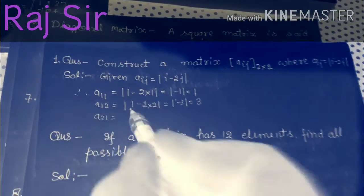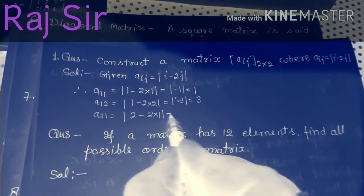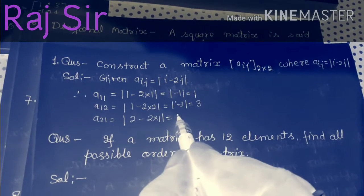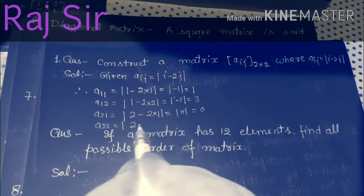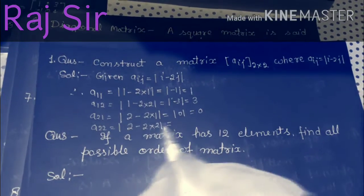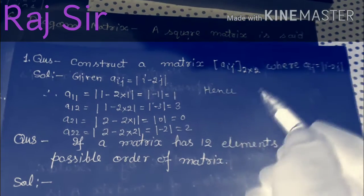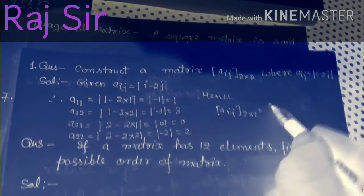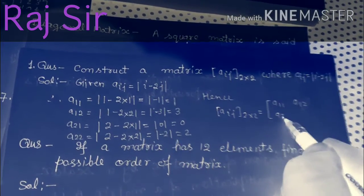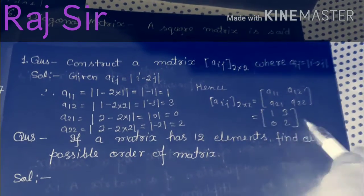A21 equal to mod 2 minus 2 into 1, equal to 2 minus 2, equal to mod 0, equal to 0. And A22 equal to mod 2 minus 2 into 2, equal to mod 2 minus 4, equal to mod minus 2, equal to 2. Hence, the required matrix A(i,j) of order 2 cross 2 is equal to [A11, A12; A21, A22], putting the values: [1, 3; 0, 2]. This is the answer.